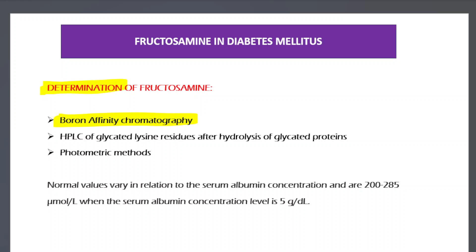Fructosamine is measured by boron affinity chromatography, which is also a good methodology for estimating HbA1c and glycated lysine residues after hydrolysis of glycated proteins. Photometric methods are also available. Normal values vary depending on serum albumin concentration; for a serum albumin of 5 g/dL, the normal fructosamine range is 200 to 285 mmol/L.